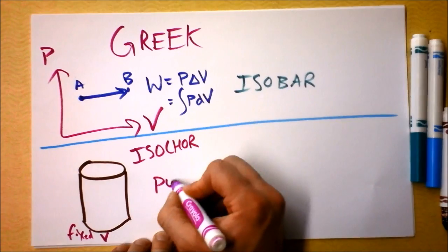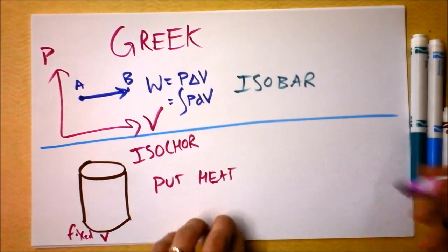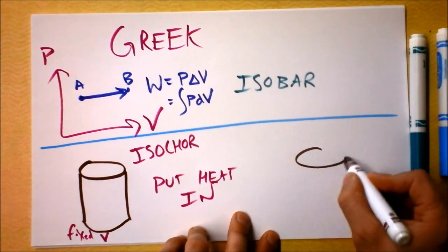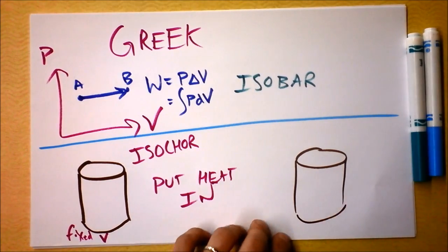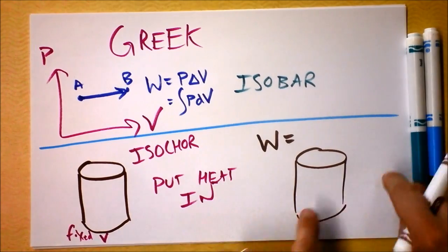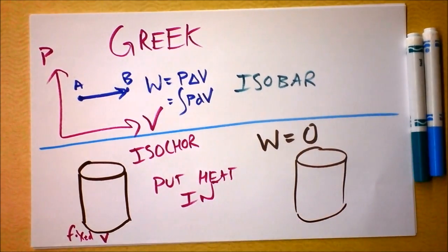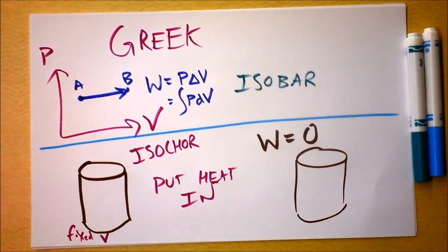Anyway, I dump heat into this system, and guess what it does? Nothing. It just heats up. So this is probably the least exciting of all of them. Frankly, I think it's really boring, and I'm about to end this video. So guess what? The work done by the gas as nothing happens except something about the thermal energy inside is zero. So you can put whatever heat you want into something, but if it's in a fixed thing, it won't do work on the outside world.